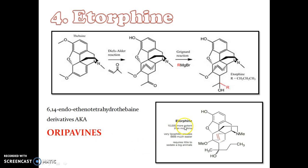Etorphine is the best known of this class of derivatives. Etorphine is about 10,000 times more potent than morphine.